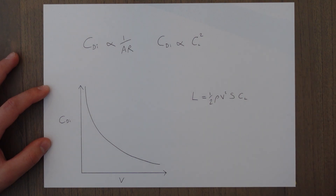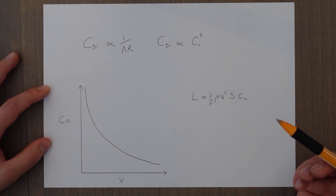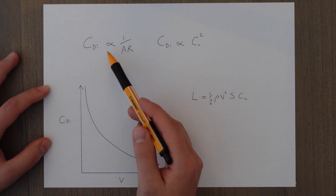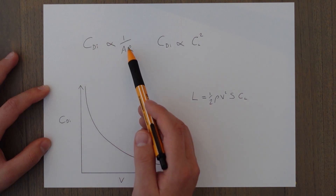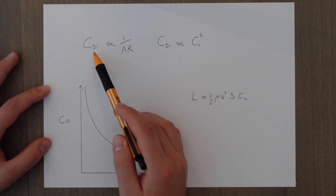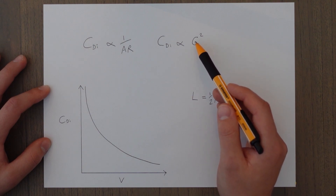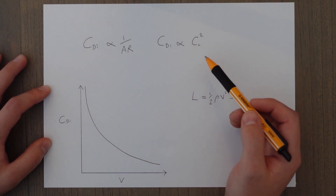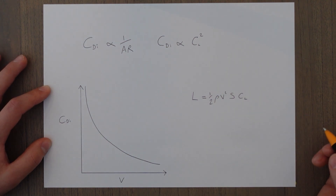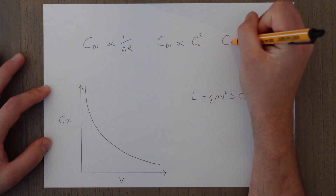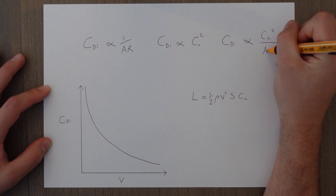High aspect ratios are good for reducing induced drag, so we can say that induced drag varies indirectly with aspect ratio — aspect ratio goes up, induced drag goes down. Induced drag is also dependent on the coefficient of lift, and the relationship is that the coefficient of induced drag varies directly with the coefficient of lift squared. Combining them, the coefficient of induced drag varies with CL squared over the aspect ratio.